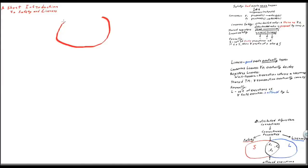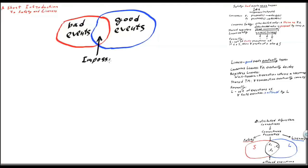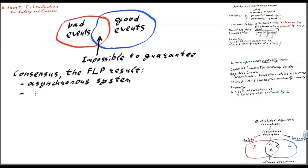Since safety property states that some bad events should never happen, and the liveness property states that some good events should eventually happen, it might occur that when some bad events coincide with some good events, it is impossible to guarantee both of the properties. For example, in the case of consensus, the famous FLP result states that in an asynchronous system which uses registers to implement consensus, it is impossible to guarantee both consensus safety and consensus liveness.